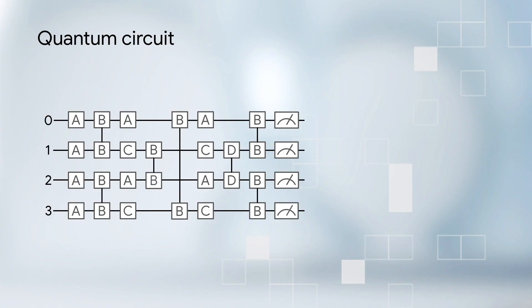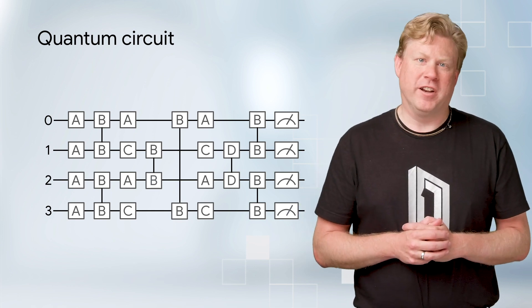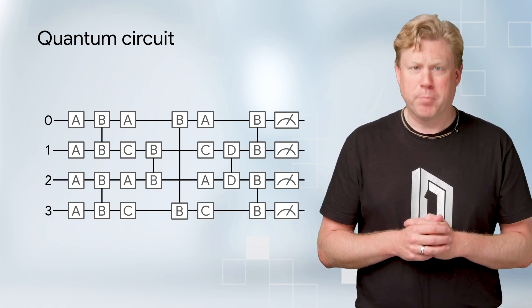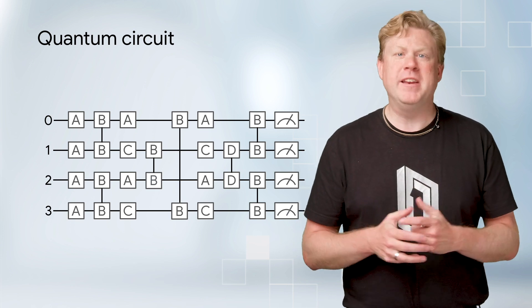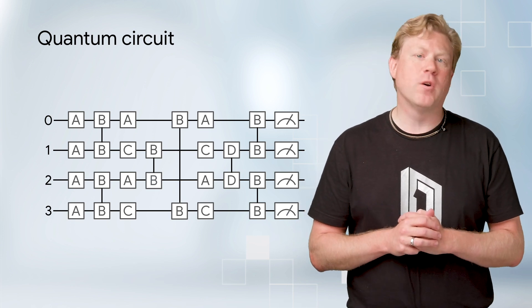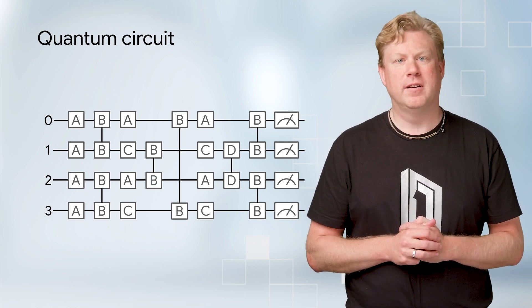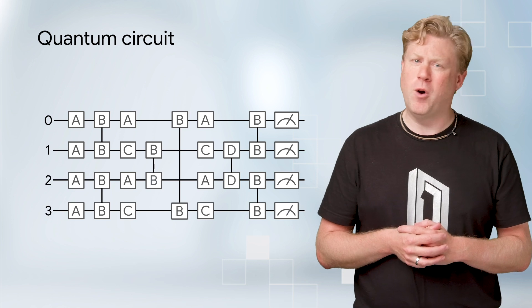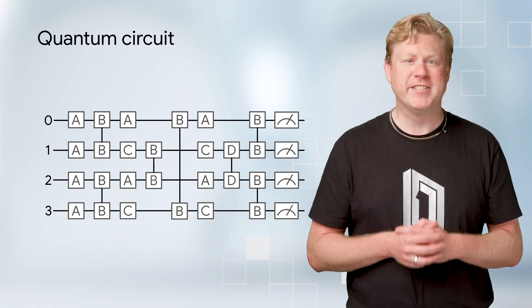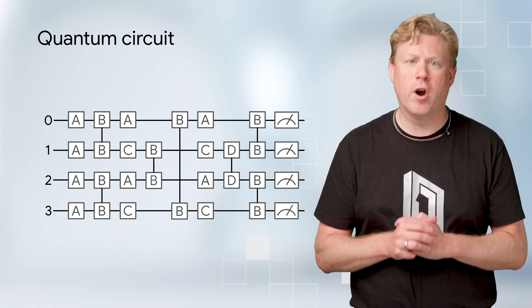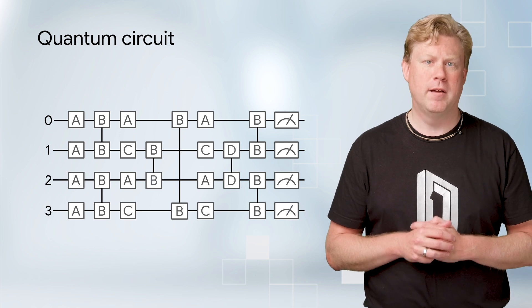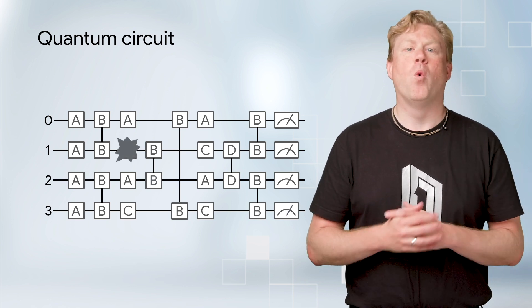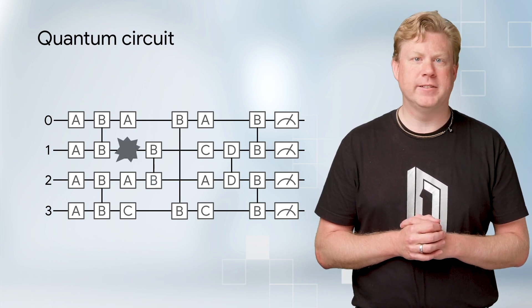Consider again a quantum circuit. Every gate that you apply in this circuit corresponds to some pretty complicated electronics, shaping and sending of electromagnetic fields to the quantum computer. These pulses are not always perfect, and so every single one of the gates you perform has some effective chance of failing. Boom! One of our single qubit gates has failed.